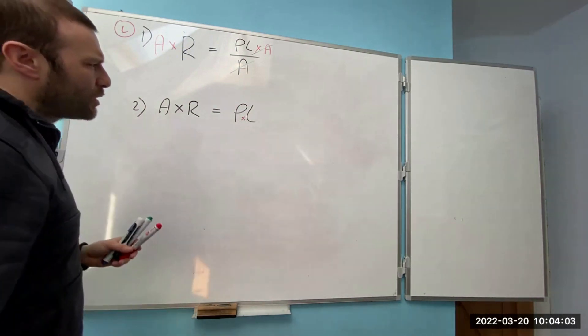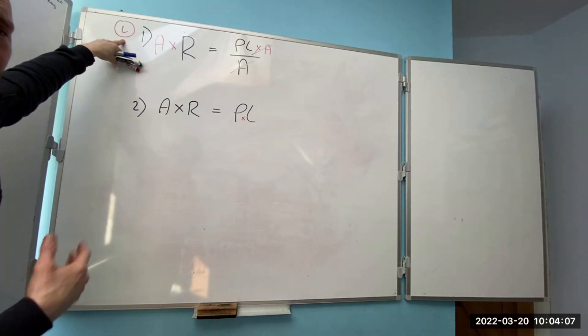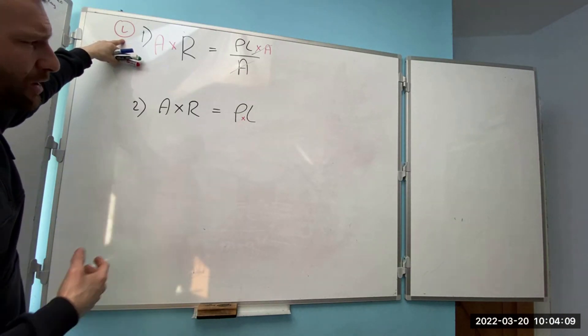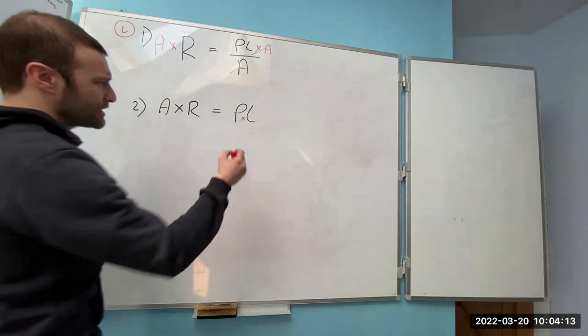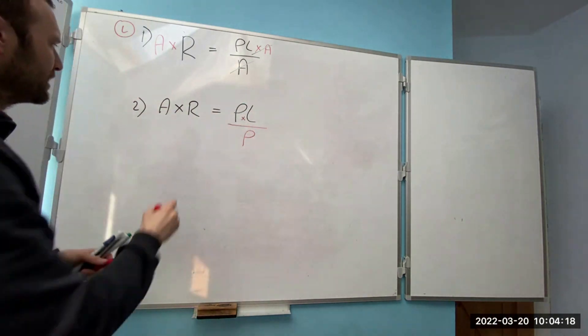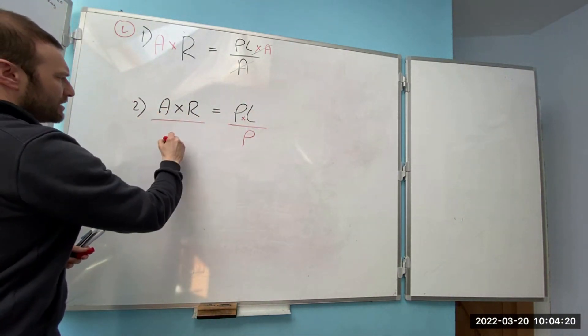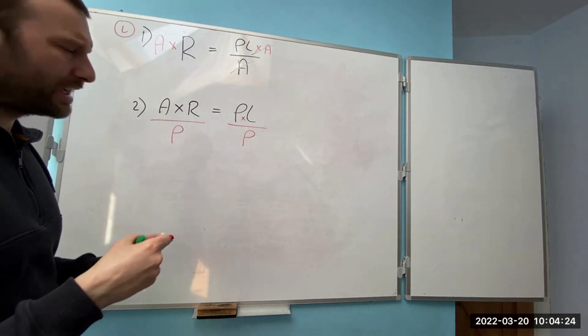I've now got everything on the top line so now I can select out what I'm looking for. I can look back up here, remind myself what we're looking for. We're looking for L. L is attached to ρ. At the moment it's times. Opposite of times is divide. So I can divide the ρ away from the L. Whenever I do that side I do this side and again the formula is balanced but I need to clean it up.